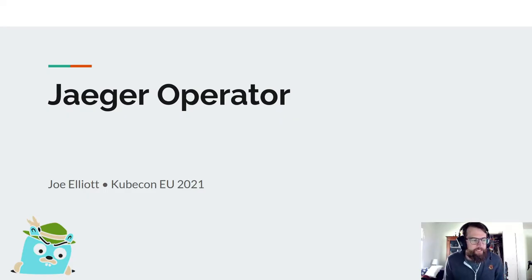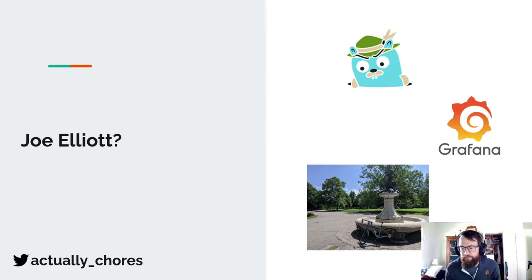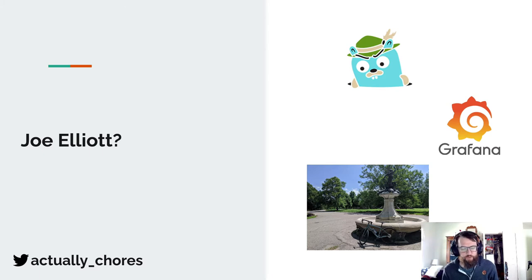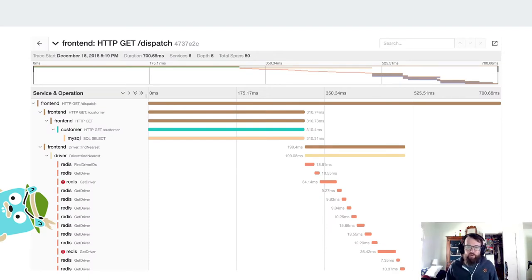Hey everyone, my name is Joe. I'm a Jaeger maintainer who works at Grafana Labs primarily on our distributed tracing infrastructure. I enjoy riding my bike quite a bit — that's a picture from my local park. My Twitter handle is at the bottom — I mainly tweet about distributed tracing. Jaeger is a distributed tracing backend that allows us to visualize a request as it passes through our infrastructure.